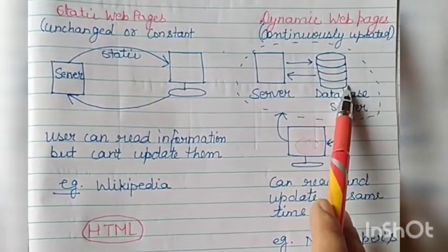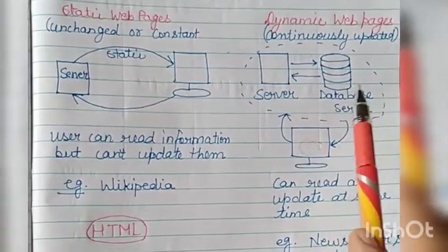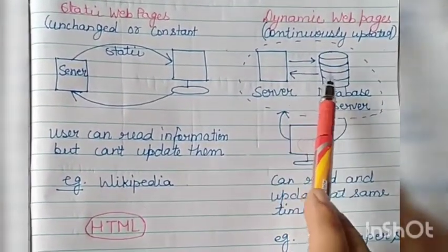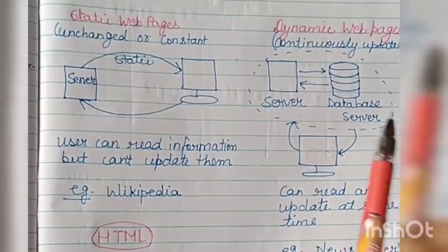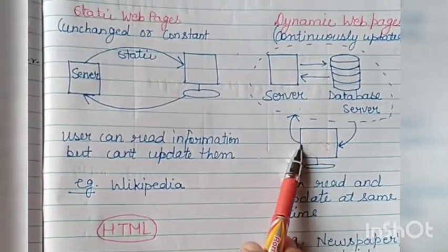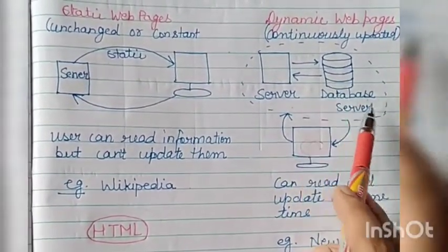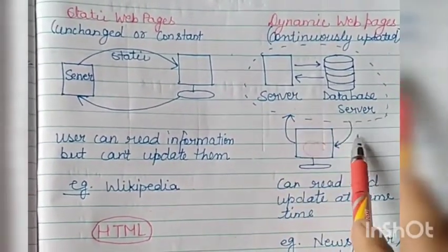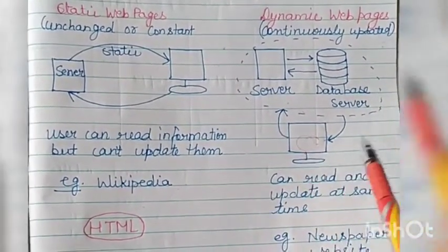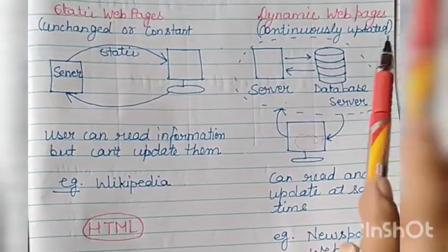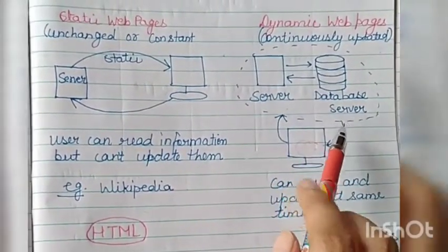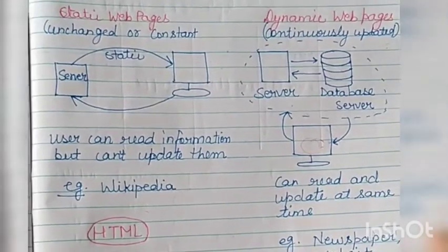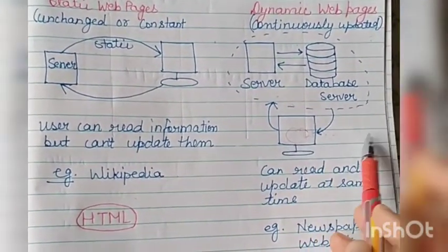The user can make updates from there. So if you want to request some service from the server, the server checks on the database server. The information available on the database server is fetched and transferred to you. The next day, if the information on the database server changes, then the server takes that new information and transfers it to your system. This type of structure is known as dynamic web pages.